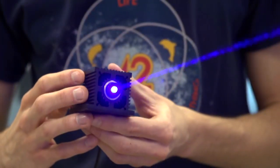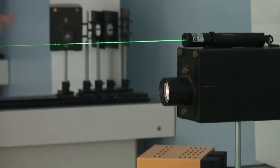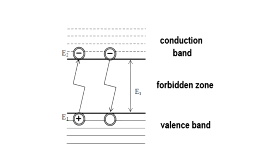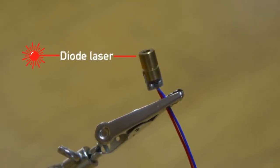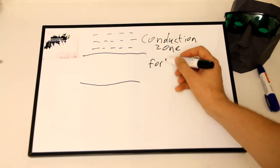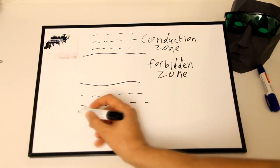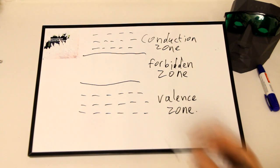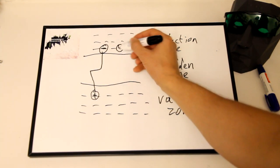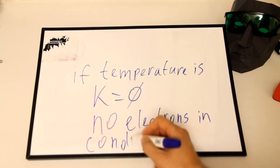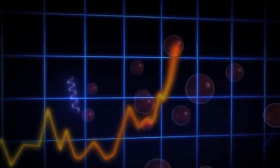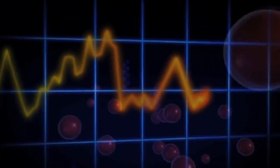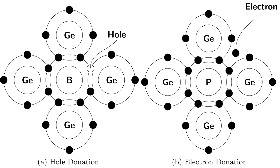In a semiconductor laser, the energy considered is the energy difference between the conduction band and the valence band. A laser diode, like any semiconductor diode, is characterized by the presence of a valence band, a conduction band, and a forbidden band called the forbidden zone. These bands characterize the distribution of electrons on atomic orbitals. At absolute zero, there are no electrons in the conduction band. Increasing the temperature increases the energy of the system, contributing to thermal generation of charge carriers. Electrons that receive energy equal to or greater than the width of the forbidden band are transferred to the conduction band and become free.